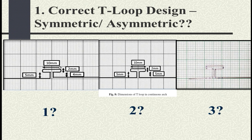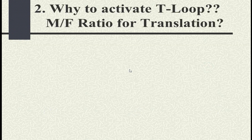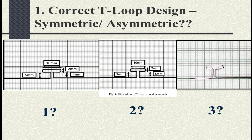In all three photographs the width of the T-loop is 10 mm and the loop thickness is 2 mm. However, the vertical distance differs: the first is 5 mm, the second 4 mm, in the third both vertical arms are 5 and 5 mm, and in another the distance between vertical arms is quite large. So which is correct — one, two, or three?